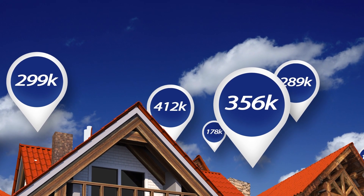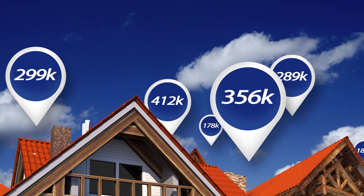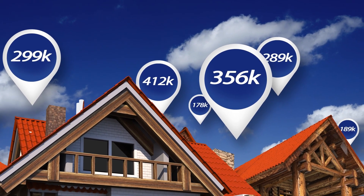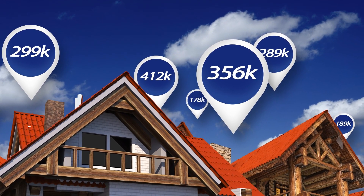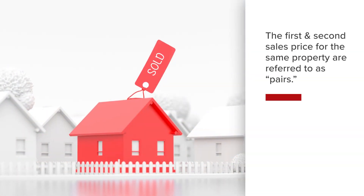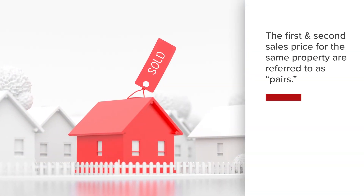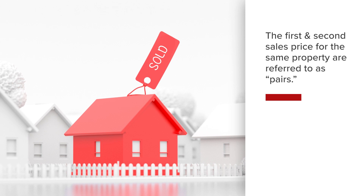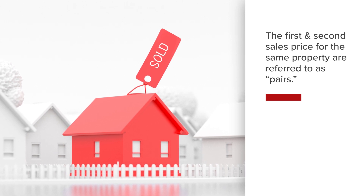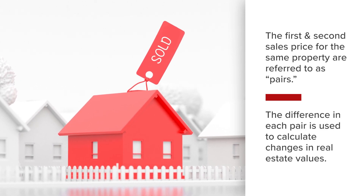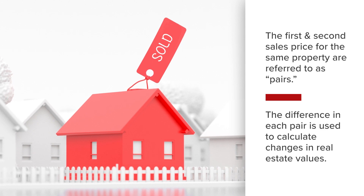S&P Global observes single-family homes that have been sold repeatedly with arms-length transactions. The first sales price and the second sales price for the same property are referred to as pairs. The difference with each pair is used to calculate changes in real estate values within the respective areas.